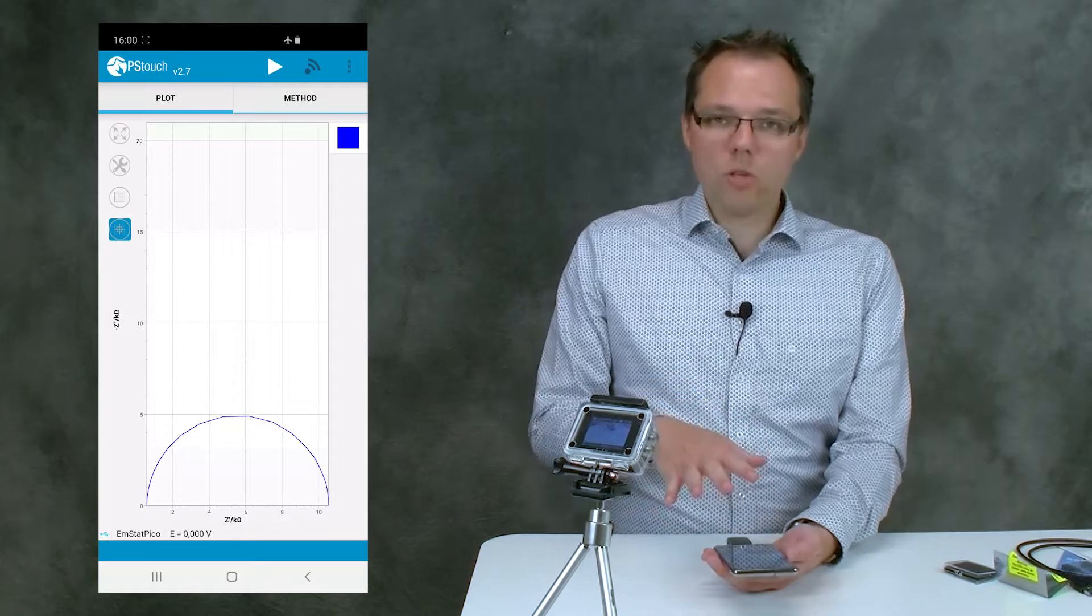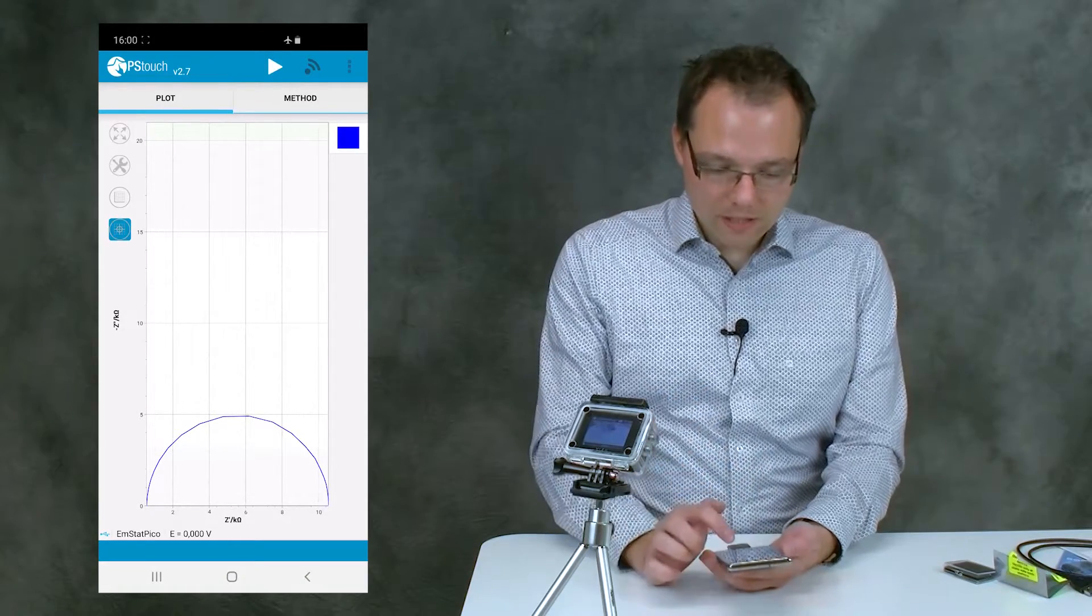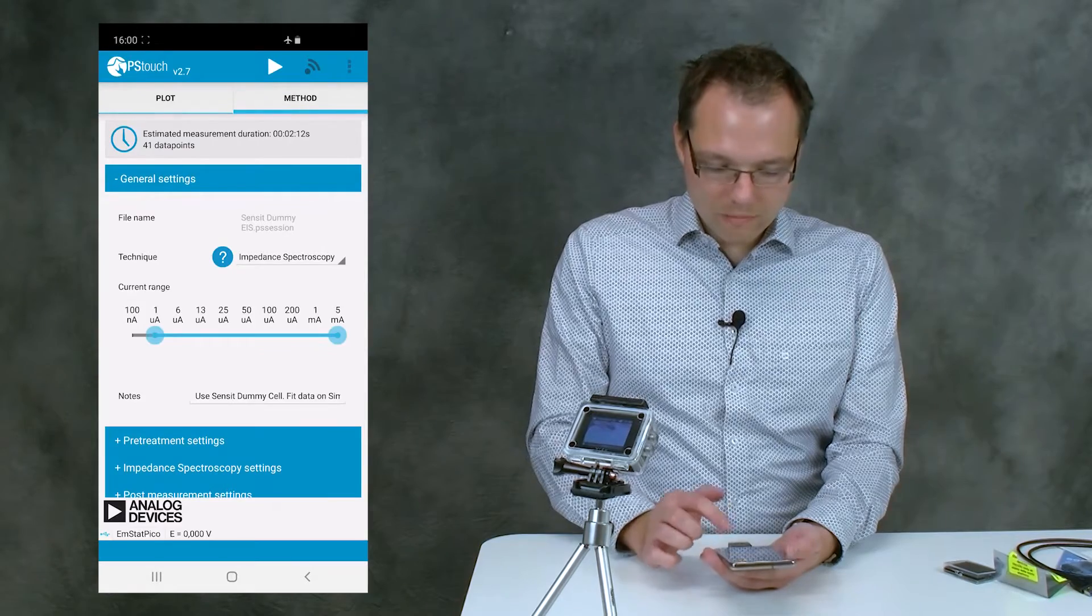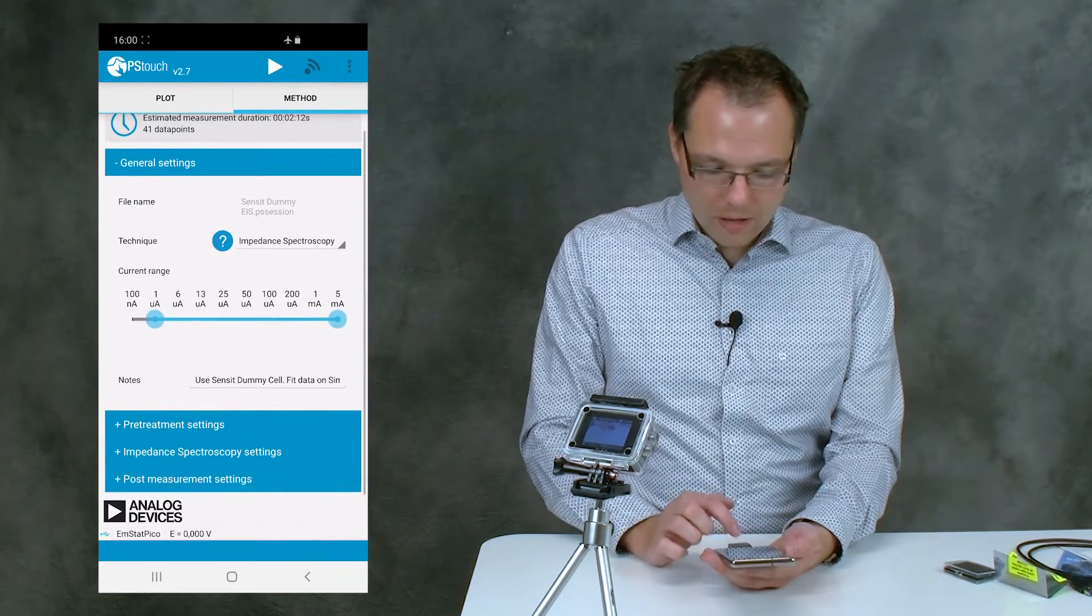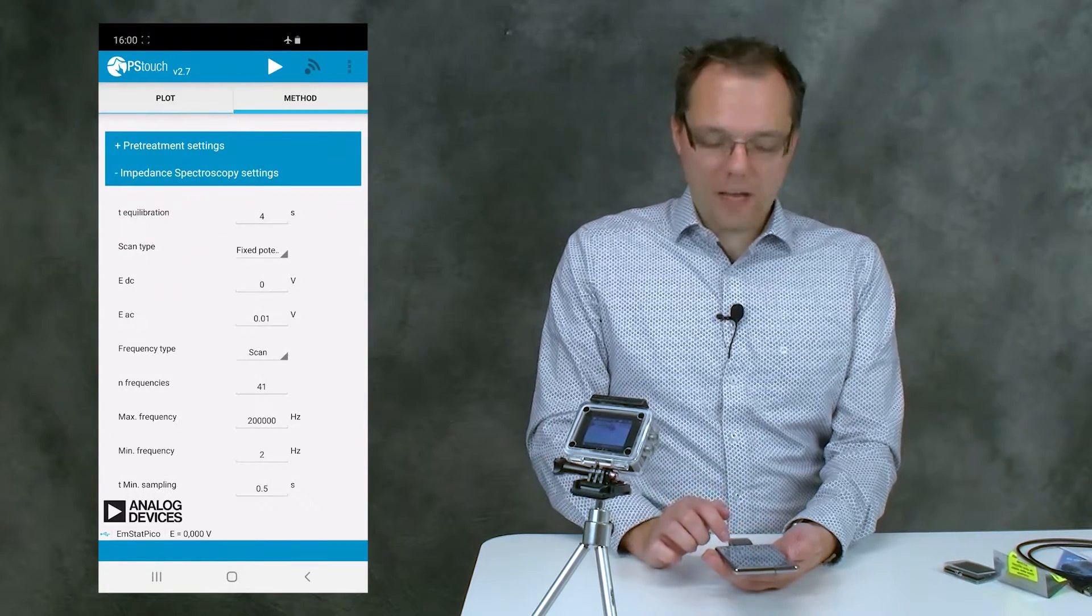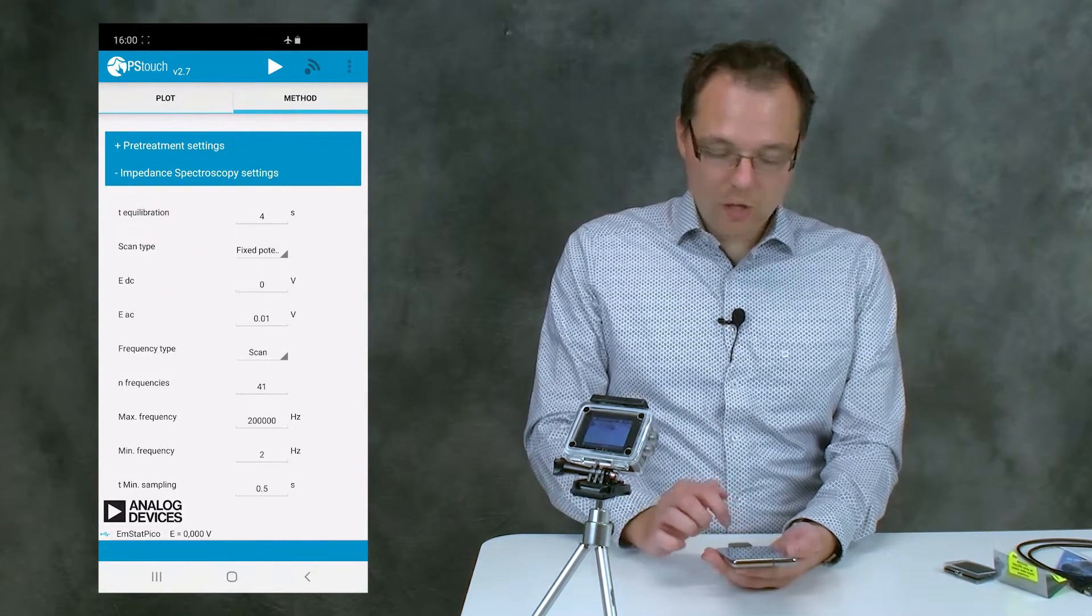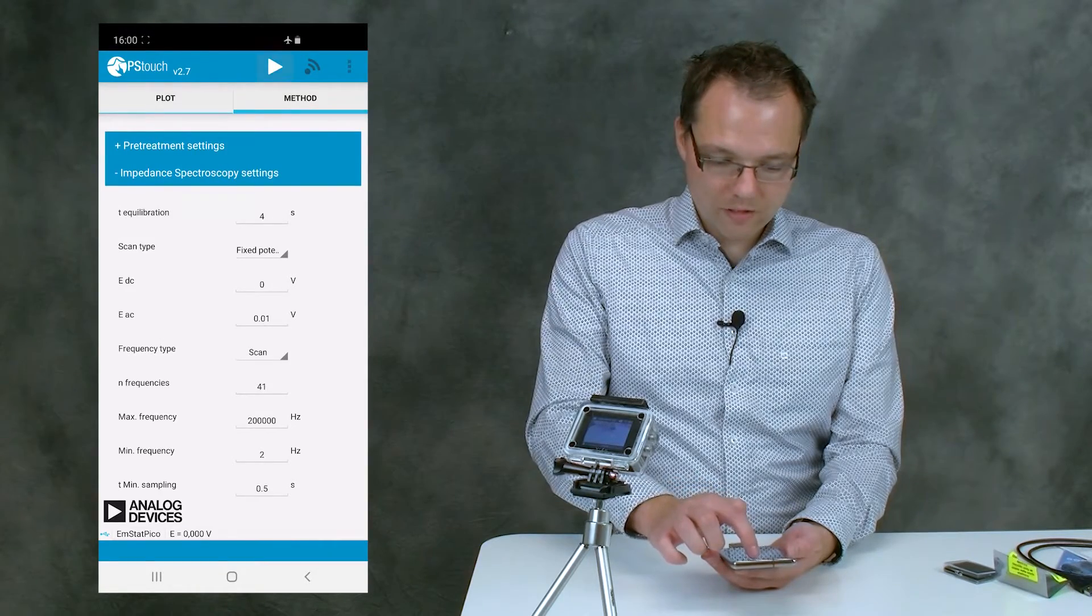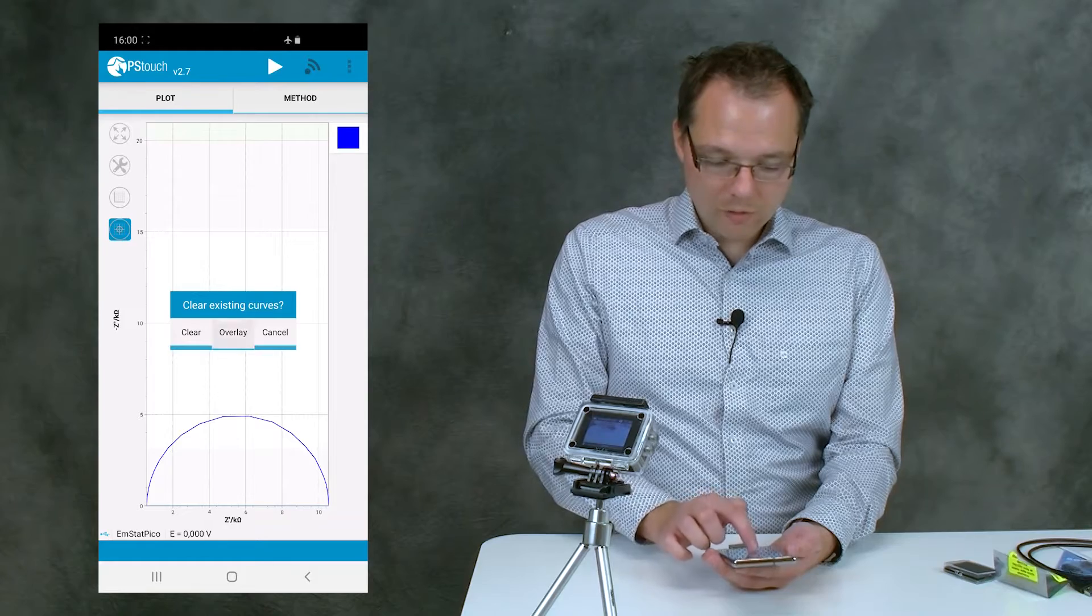Well, but that is now a loaded measurement. The advantage is that when you load a measurement, all of the method parameters are loaded together with that measurement. So we actually have all the parameters already set and can just press the Run button, and we want to overlay the measurement to see if it works exactly the same.